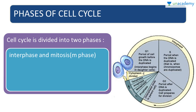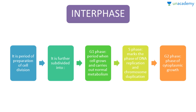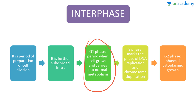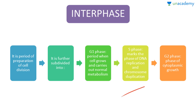The cell cycle is broadly divided into two phases: interphase and M phase, or mitosis phase. Interphase is a period of preparation for cell division, not the actual division. It is further subdivided into G1 phase — when the cell grows and carries out normal metabolism — S phase, which marks DNA replication and chromosome duplication, and G2 phase, which is the phase of cytoplasmic growth.